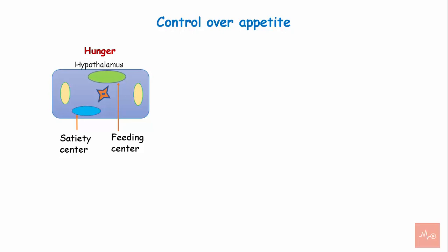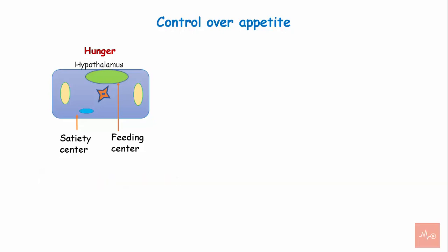Stimulation of the feeding center and inhibition of the satiety center causes hunger and increased food intake. Similarly, inhibition of the feeding center and stimulation of the satiety center reduces food intake and hunger.